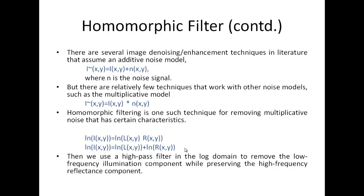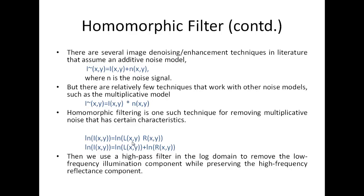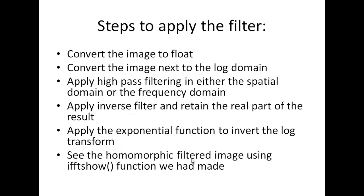The steps to apply the filter would be: first convert the image to float, convert the image next to the log domain, then apply the high pass filtering in either the spatial domain or the frequency domain to remove the low frequency illumination component. Apply the inverse filter and retain the real part of result. Then apply the exponential function to invert the log transform and see how the homomorphic filtered image looks like using the iftshow function which we had made in the previous lectures.